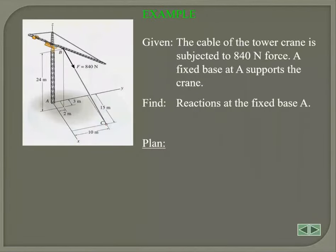So what we've got here, it says the cable of a tower crane is subjected to 840 Newton force. That's the cable where a force of 840 Newtons is applied. A fixed base at A supports the crane, so the crane is rigidly supported at point A. Find the reaction at the fixed point A.